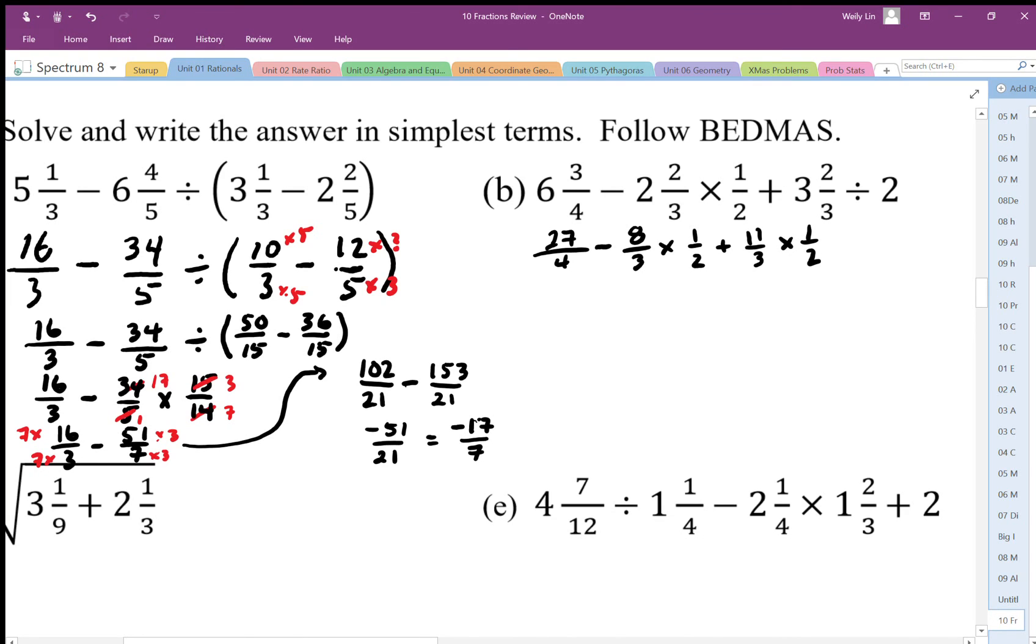So we're going to do the multiplication first. The 27 over 4 stays the same. We're going to simplify this with 4 and 1, so we end up with 4 over 3 plus this is going to end up being 11 over 6.